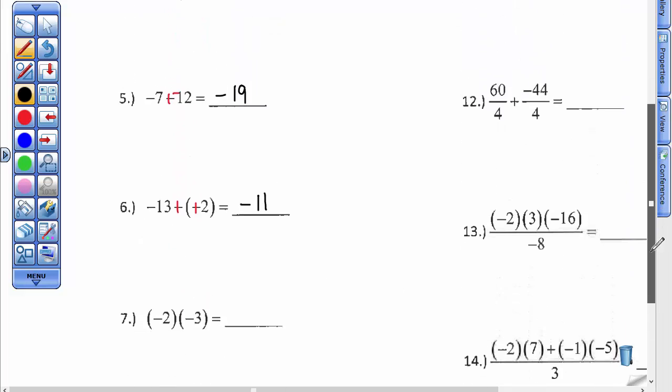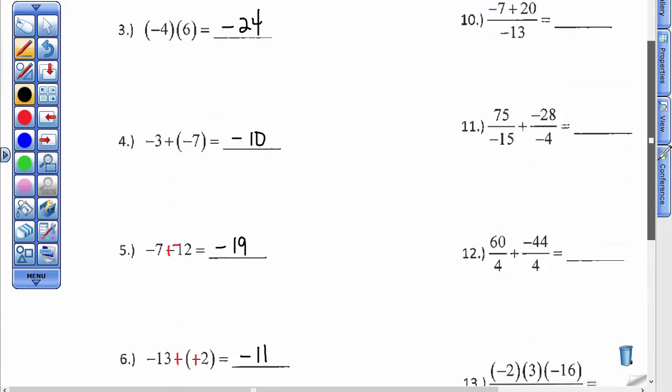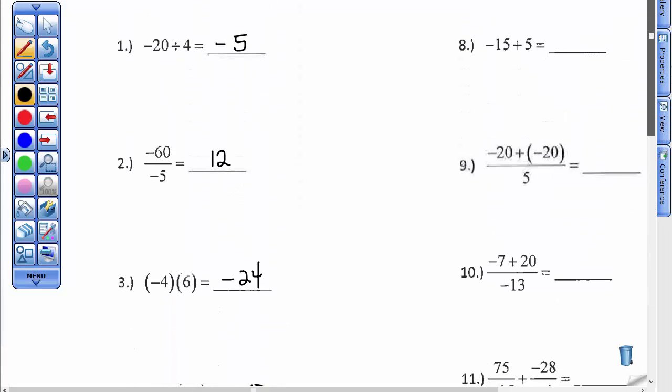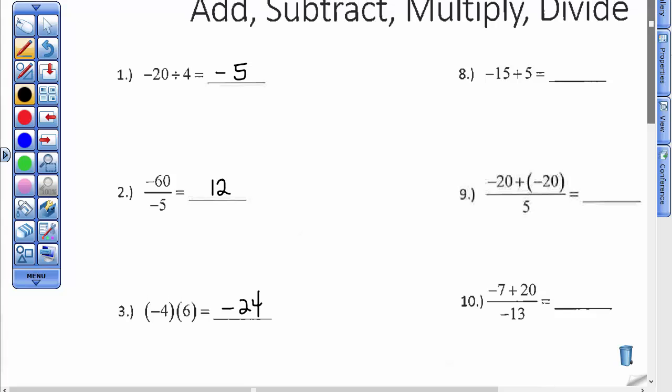Number 7 is back to multiplication. A negative times a negative is a positive. Let's go back over here and catch a few more. Plus, we have a little bit of order of operations here. Number 8 is just a negative 15 and adding a positive 5, so the difference in their absolute values is 10 and the 15 has more pull, so I have to put that sign on.